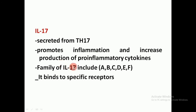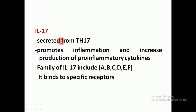Interleukin-17 includes different types: A, B, C, D, E, and F. It binds to specific receptors to exert its function. It was first recognized in the gastric mucosa during infection with H. pylori (Helicobacter pylori). So T-helper 17 cells secrete interleukin-17, and it is important in bacterial infection.